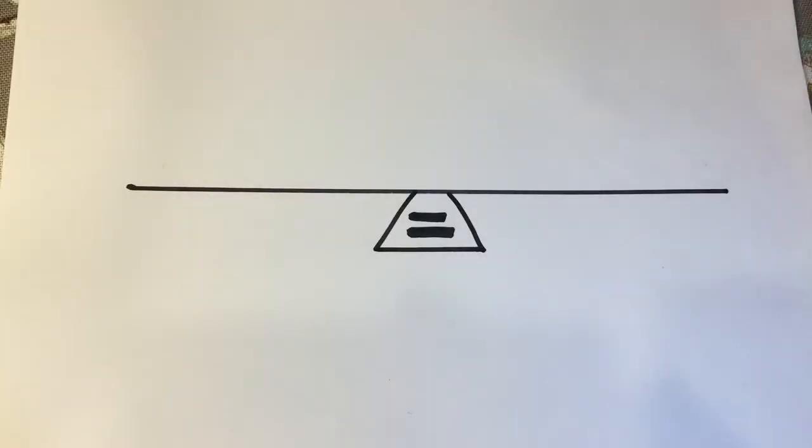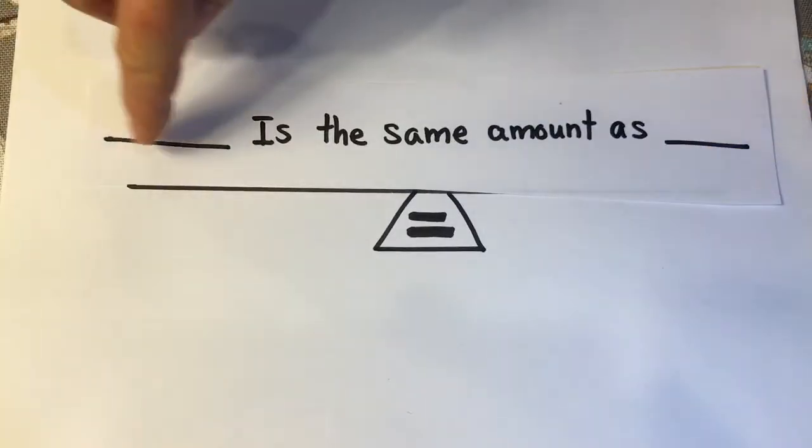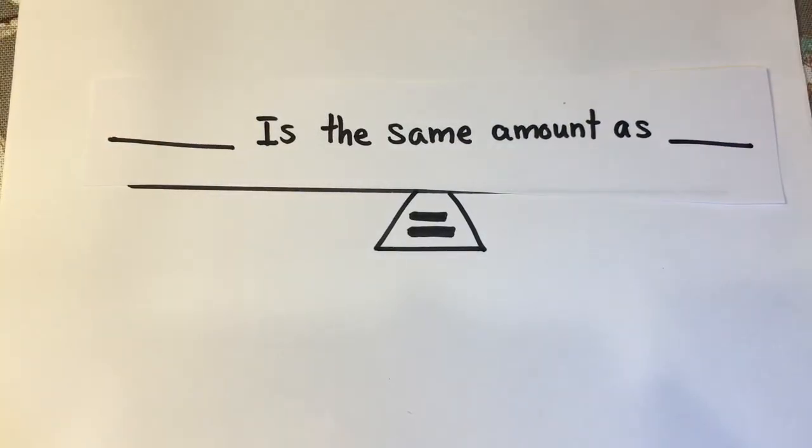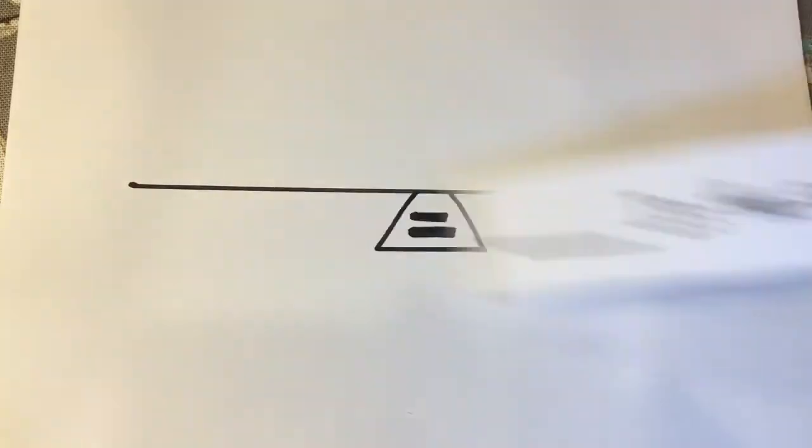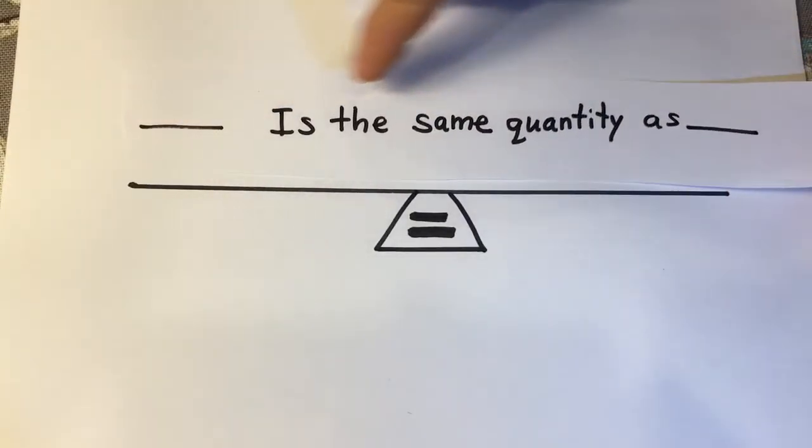I find it easier to visualize what the equal sign is if I think of it as a balance. Because the equal sign really means this side is the same amount as this side or this side is the same quantity as this side.